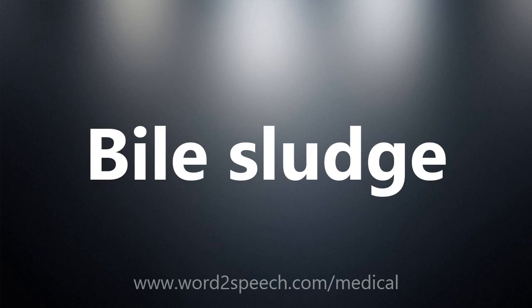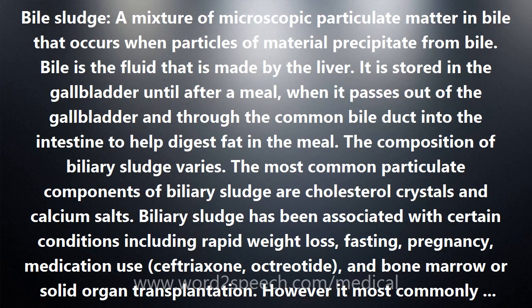Bile sludge is a mixture of microscopic particulate matter in bile that occurs when particles of material precipitate from bile. Bile is the fluid that is made by the liver. It is stored in the gallbladder until after a meal, when it passes out of the gallbladder and through the common bile duct into the intestine to help digest fat in the meal.